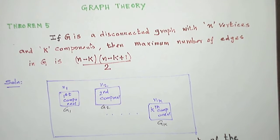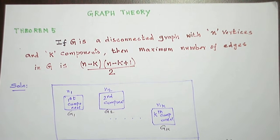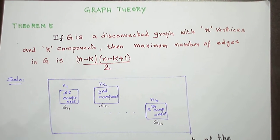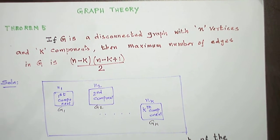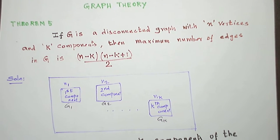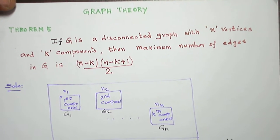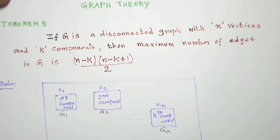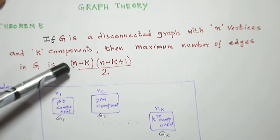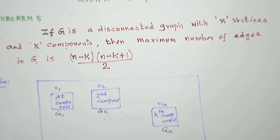Students, today let us see a theorem result from a disconnected graph. In the last theorem 4, we have seen the maximum number of edges in a connected graph is n(n-1)/2. Likewise, in a disconnected graph, what would be the maximum number of edges? Suppose G is a disconnected graph with n vertices and k components. Then the maximum number of edges is (n-k)(n-k+1)/2.